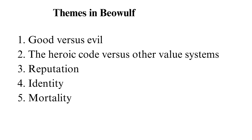The heroic code versus other value systems: Among the Geats and Danes, heroism is a valued trait likely due to the violence that threatens these communities. Warriors are expected to be strong, courageous, and loyal. The locals also have legends about past heroes and recount their achievements while contrasting them with evil kings such as King Heremod. However, this heroism also costs many characters their lives, which leaves their relatives grieving — as is the case with Hygd, who loses her son and husband in battle.